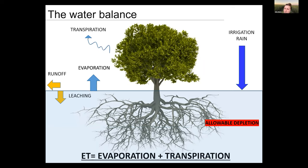When we irrigate, we refill or replace the water used in the past period. If we don't calculate well how much water was used, we'll apply too much, which is lost by runoff or leaching, making irrigation less efficient and potentially harming tree health. As was mentioned earlier, it's difficult to kill an olive tree by reducing water, but it's very easy to harm trees with over-irrigation. So it's important to know how much water you can apply.